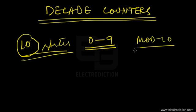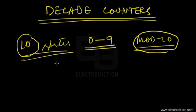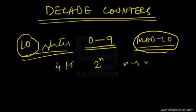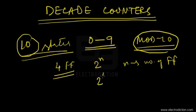Since they pass through 10 states, they're often referred to as mod-10 counters. We require four flip-flops to construct the circuit of a decade counter. Since a counter can count up to a maximum of 2 to the power n states, where n represents the number of flip-flops, with four flip-flops the counter has the ability to pass through 2 to the power 4, that's 16 states in total.